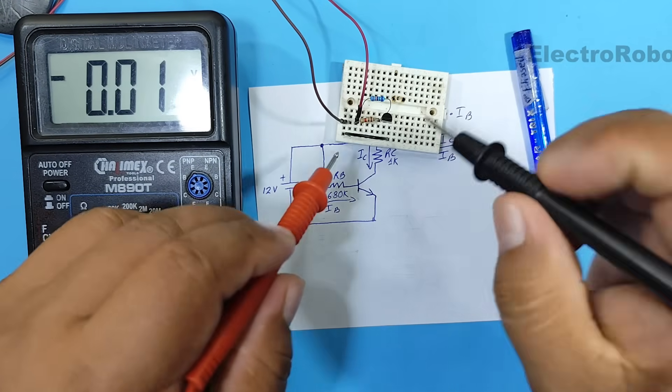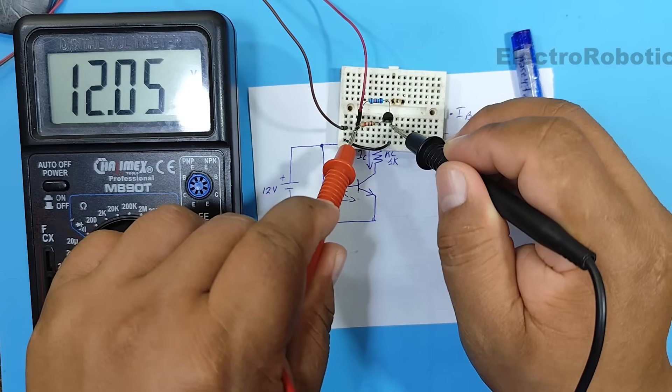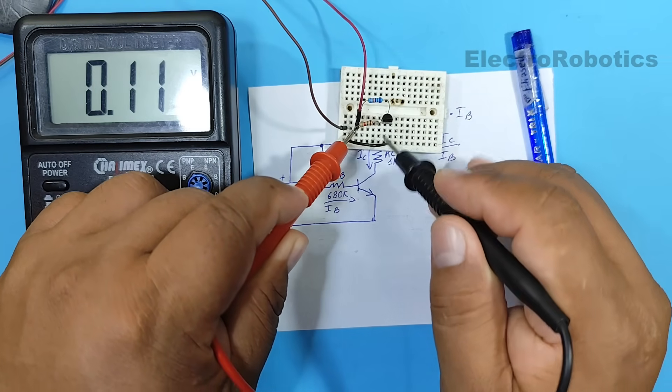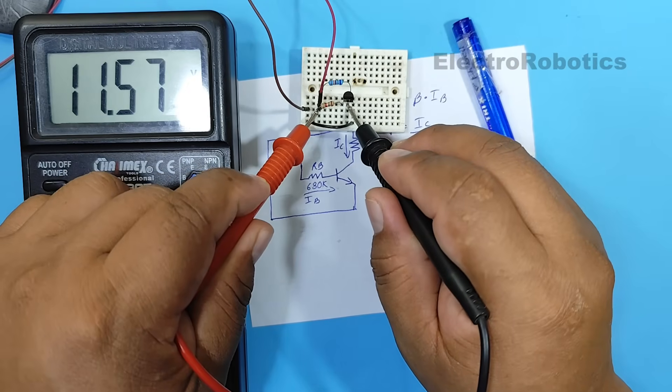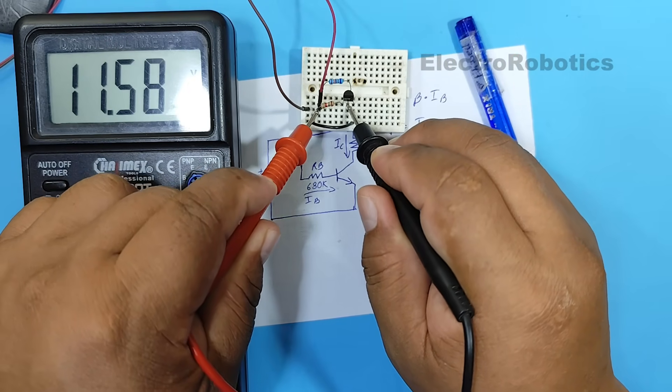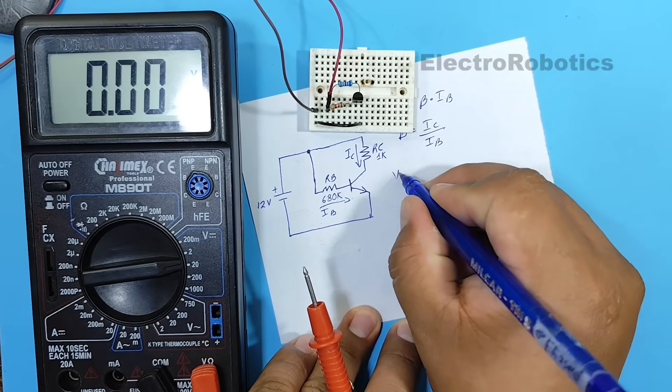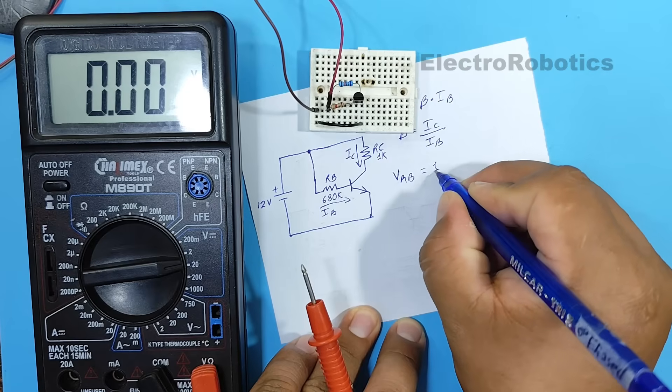In this case, we are using a 12 volt power supply. Now we will measure the voltage across the base resistor. In this case, it is 11.6 volts at the base resistor. The voltage across the base resistor is 11.6 volts.